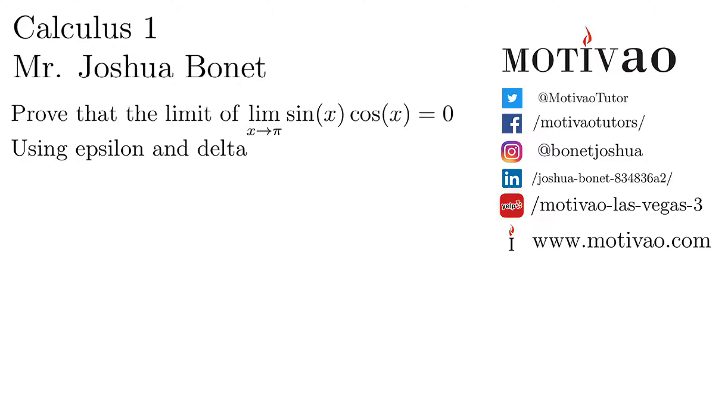As always, we start with the definition. If 0 is less than absolute value of x minus c, in this case pi, less than delta, then absolute value of f of x, in this case sine of x cosine of x, minus l, in this case 0, has to be less than epsilon.